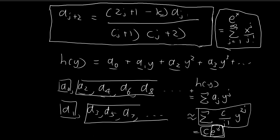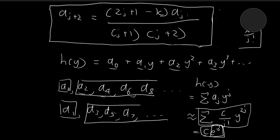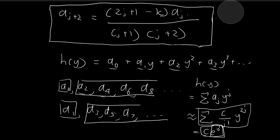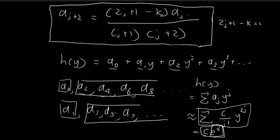In order to get around this problem, we need to specify a special condition. It seems like in order to arrive at a normalizable solution, this recursion formula has to stop at some point, which means 2j plus 1 minus k must be equal to 0 at some point.